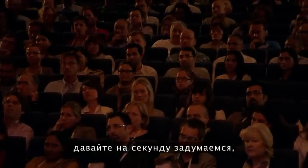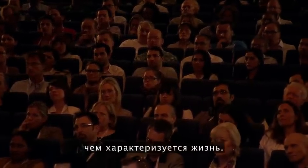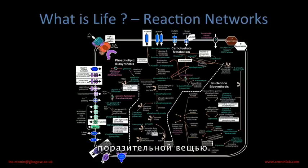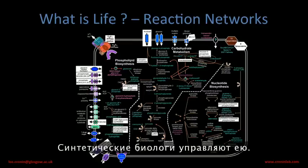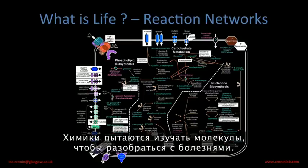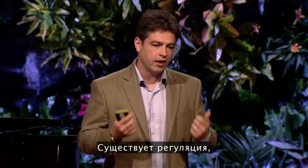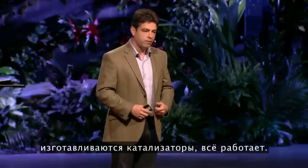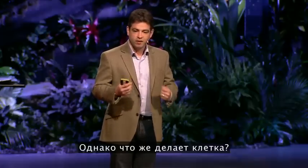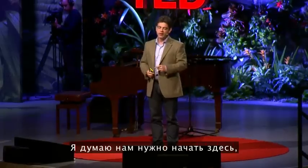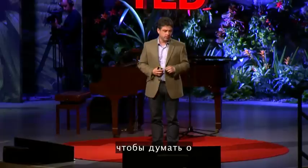Before we can make life, let's think for a second what life really is characterized by. Forgive the complicated diagram — this is just a collection of pathways in the cell. The cell is a fascinating thing. Synthetic biologists are manipulating it. Chemists are trying to study the molecules to look at disease. You have all these pathways going on at the same time, regulation, information being transcribed, catalysts being made. But what does a cell do? It divides, it competes, it survives.